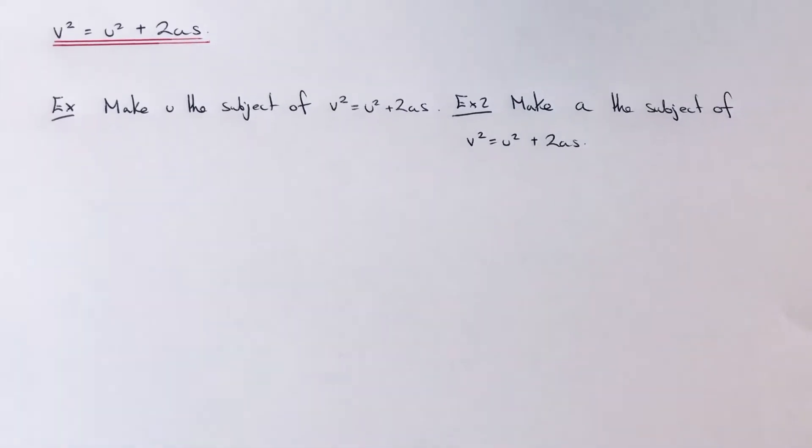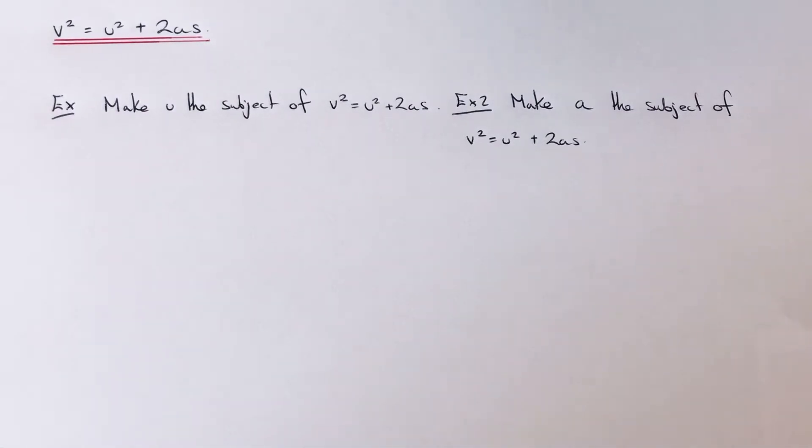Hi guys, today I'm going to show you a couple of examples on rearranging the formula v² = u² + 2as. So let's have a look at the first example: make u the subject of the formula v² = u² + 2as.